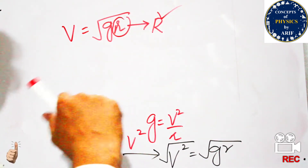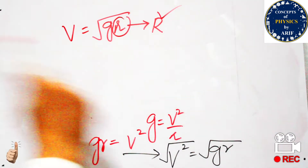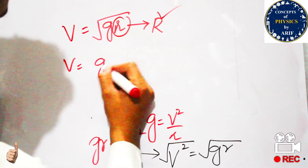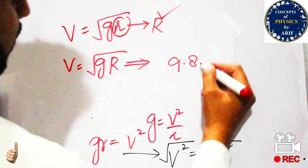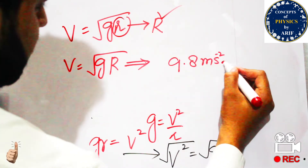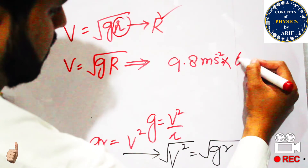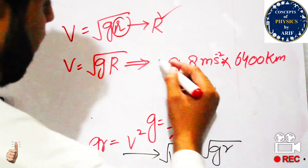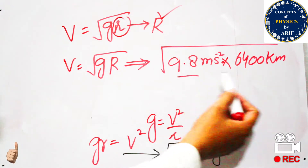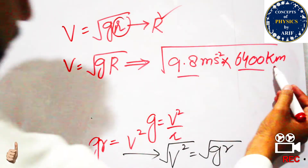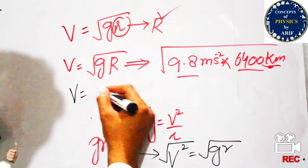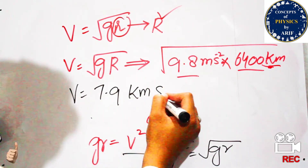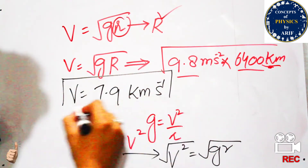So v = √(g·r). The value of g is 9.8 m/s² and the radius of the earth r is 6400 kilometers. When we multiply these two terms, converting kilometers into meters and taking the square root, the final value of critical velocity is 7.9 kilometers per second.